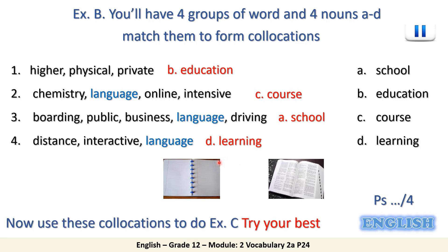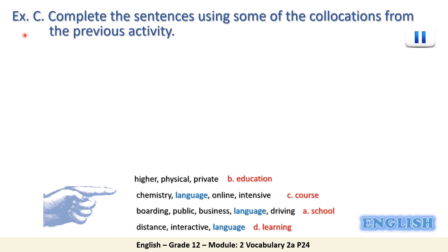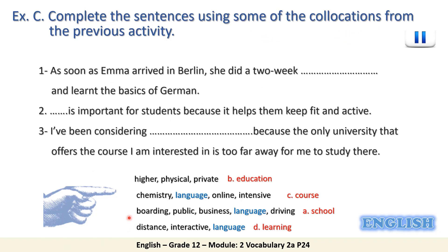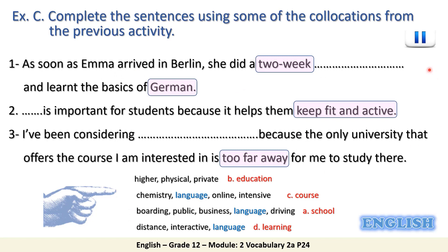Once we have formed these collocations, we are going to use them to do exercise C. In exercise C, you are going to complete the sentences from the collocations you have studied. Number one: as soon as Emma arrived in Berlin, she did a two-week intensive language course — it is intensive because it lasts only two weeks, so it's not extensive. Number two, the clue is 'keep fit and active': physical education, whose acronym is PE. It is important for students because it helps them keep fit and active.